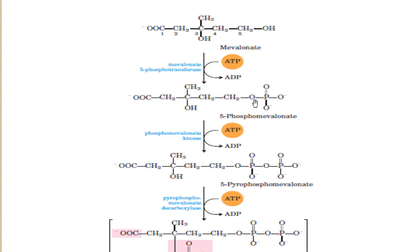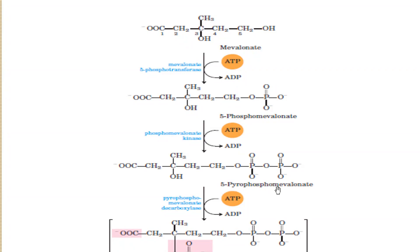In the second reaction, another molecule of ATP transfers a phosphate group onto the same 5-phosphomevalonate, forming 5-pyrophosphomevalonate — two phosphate groups are attached to the fifth carbon. The enzyme involved in this transfer of the second phospho group is phosphomevalonate kinase.